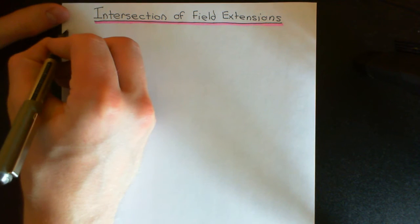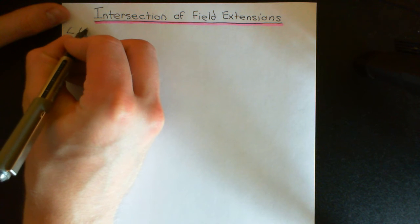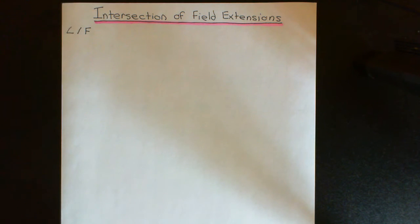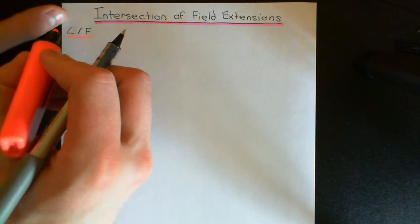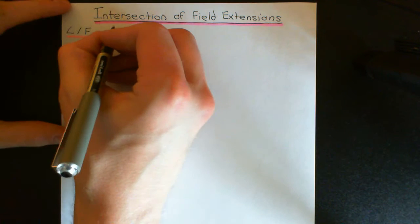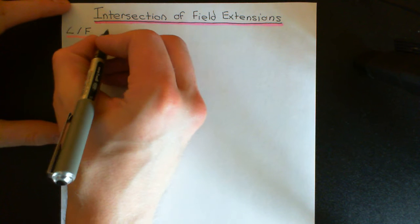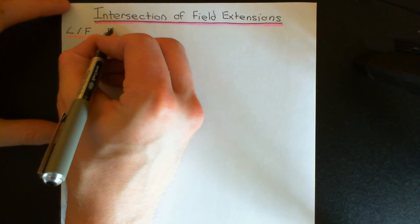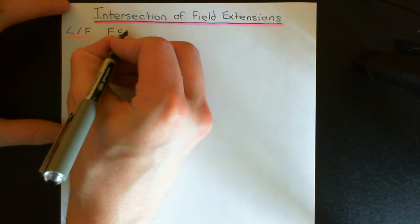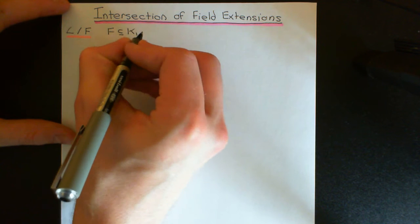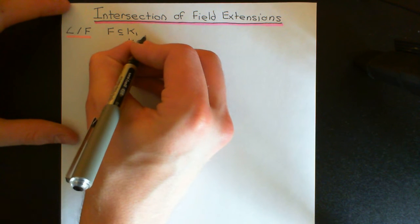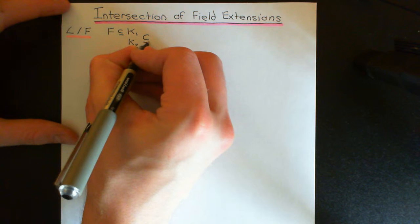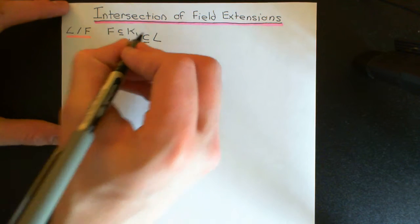So let's say that L is a field extension of F, and let's also say that we've got two intermediate field extensions that are in between F and L. So let's say we have K1 and K2 which are both in between F and L. F is going to be a subfield of both K1 and K2, and both of these are then going to be subfields of the larger field L.